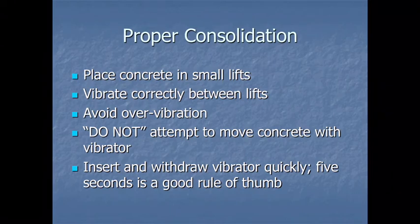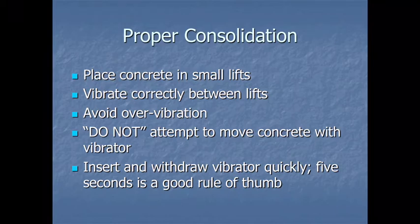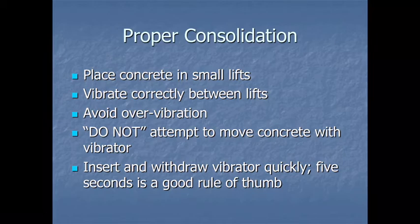For proper consolidation, place concrete in small lifts — nothing more than 12 inches. Vibrate correctly between lifts: once lift two is placed on top of lift one, vibrate all of lift two and then down into lift one to bring the two lifts together into a uniform mass. If this isn't done, you'll see a cold joint and honeycombing where the lifts meet when forms are pulled. Do not over-vibrate, as it will cause aggregate to sink and paste to rise.